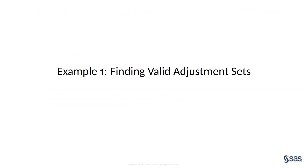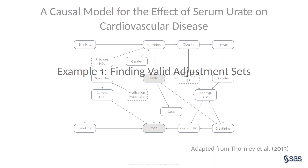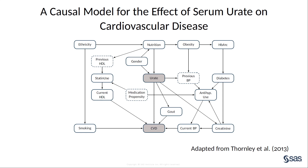Let's consider a more realistic situation. In this example, you will see how to specify a PROC CAUSALGRAPH analysis that will produce a list of valid adjustment sets for a causal model. An adjustment set is a collection of variables that you will control for or stratify by in your analysis. Here is a causal graph proposed by Thornley et al. to describe an observational study of the link between serum urate concentrations and risk of cardiovascular disease. The treatment or exposure variable is urate, and the outcome variable is CVD, which are shaded in the figure.